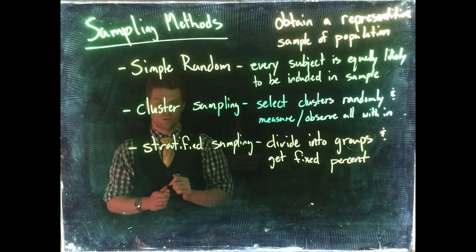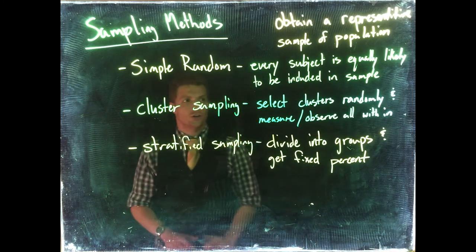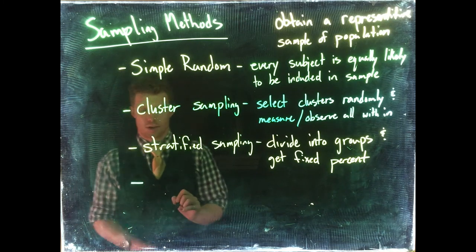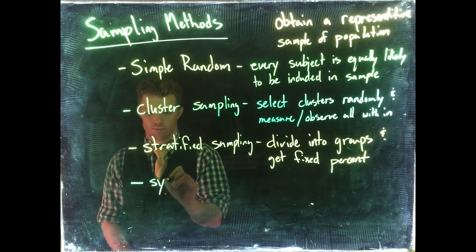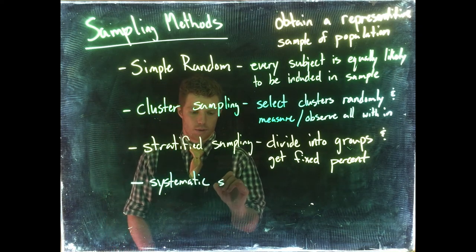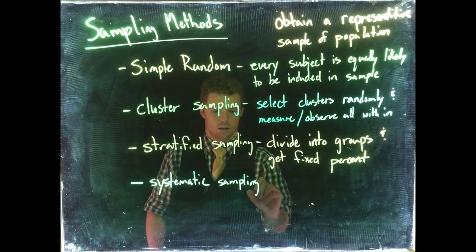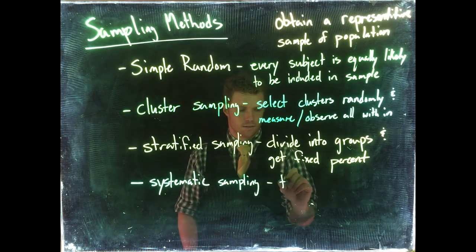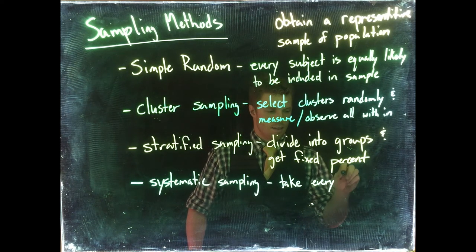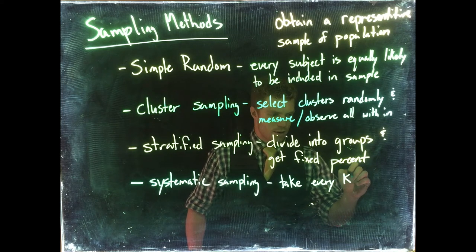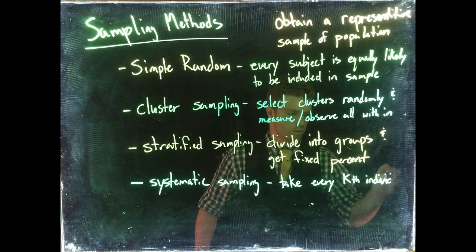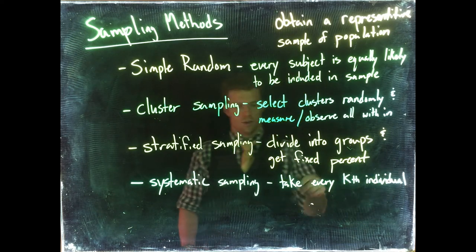That would be our stratified sampling. There's one other good or at least decent sampling method, and this is systematic sampling. Systematic sampling is where we take every kth individual. Let me explain this a little bit.